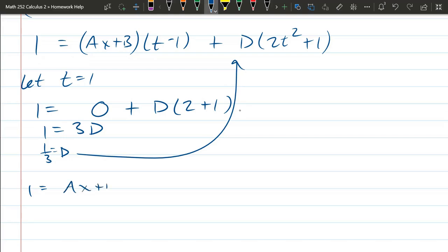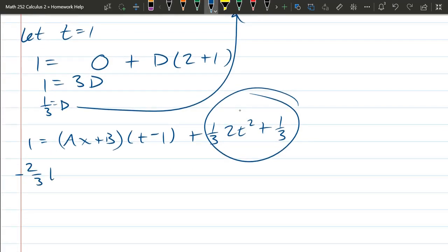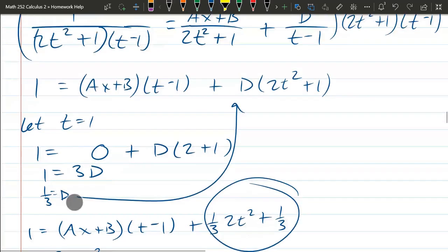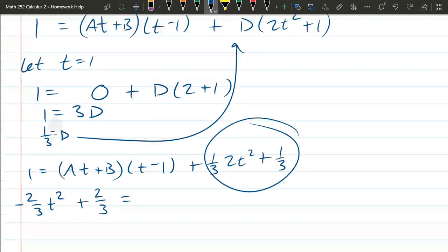I'm going to plug in that 1 third in for d right there. I do need to distribute the ax plus b. So it's 1 third times 2t² plus 1 third times 1. Now we're going to bring everything that's not unknown to the left side. So we have negative 2 thirds t² minus 1 third plus 1, or 1 minus 1 third, which is positive 2 thirds.